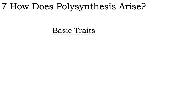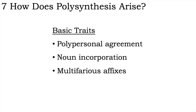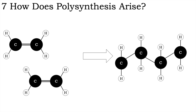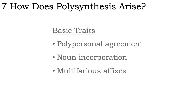We've covered a number of the basic traits that polysynthetic languages tend to have, which should hopefully help with creating your own. But I suspect many of you are considering developing a polysynthetic conlang out of a non-polysynthetic conlang that you already have, or perhaps a future descendant from some non-polysynthetic natural language. A natural question, then, is what are some pathways by which polysynthesis can develop? I won't cover all the possibilities here, just a few in roughly the same order as the traits of polysynthetic languages we've discussed.